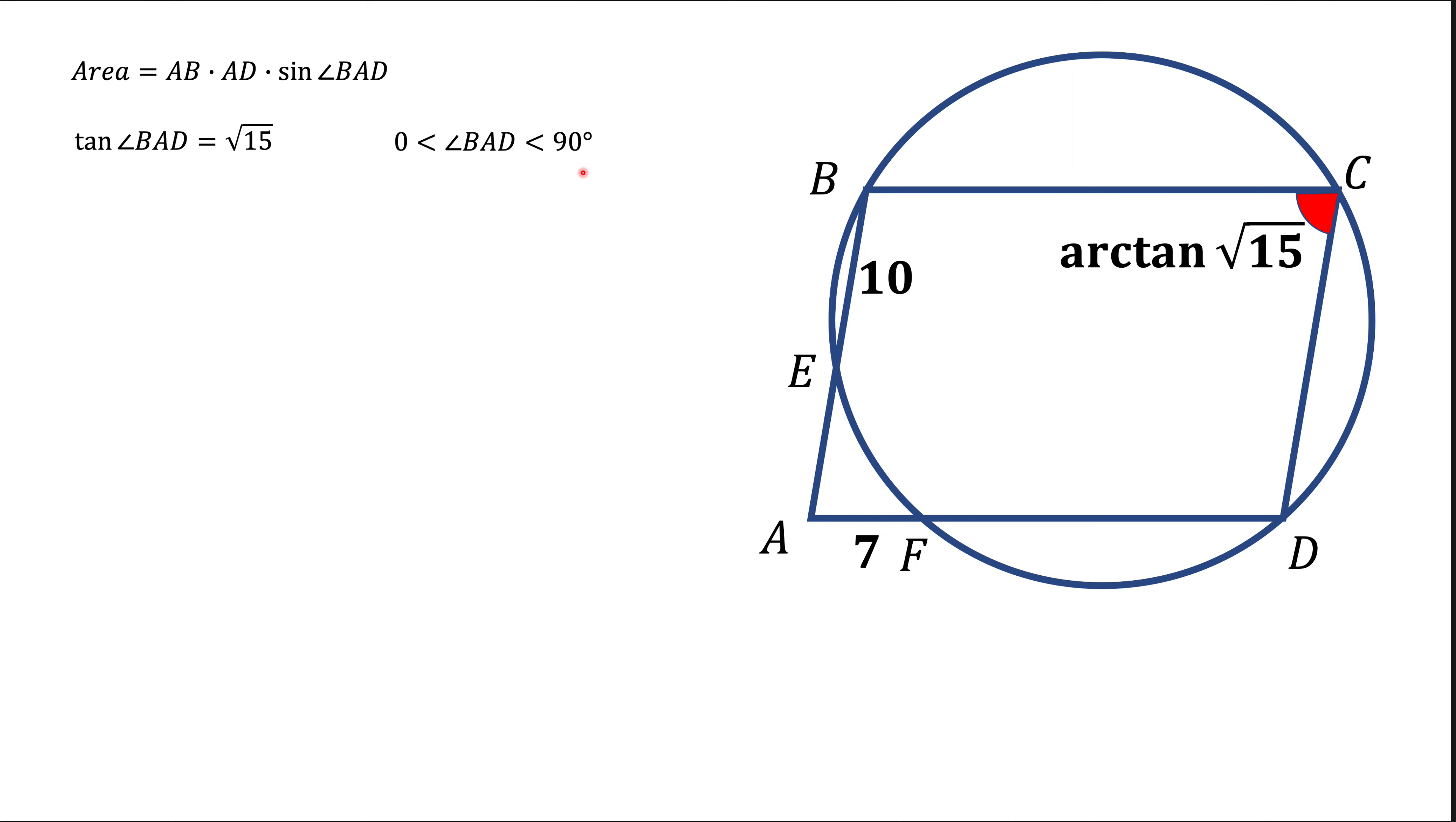Now if I know the tangent, I can find cosine using this formula. In this case, cosine will be 1 fourth. Now notice that this formula gives us cosine squared. So when we take a square root to find cosine, it could be square root with plus sign or square root with minus sign. But again, since our angle is between 0 and 90 degrees, we need to know that in that range, all trigonometric functions are positive. So sine, cosine, tangent, cotangent, secant, cosecant - they're all positive. So therefore, the answer is plus 1 fourth, not minus 1 fourth.